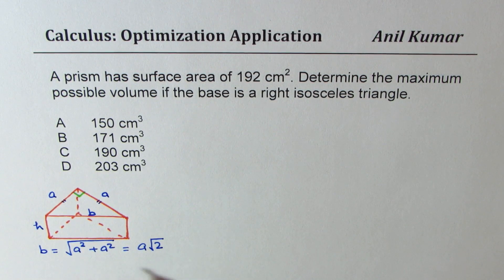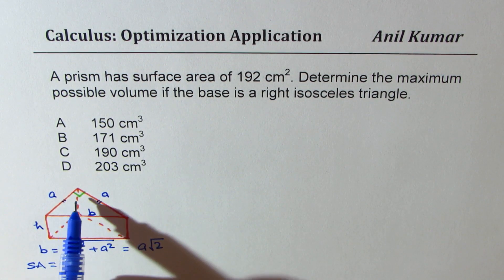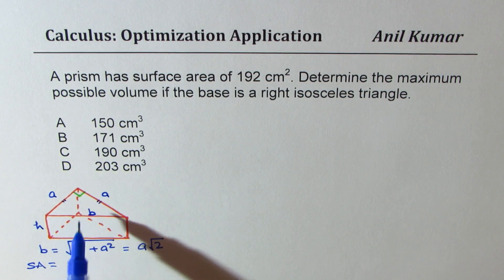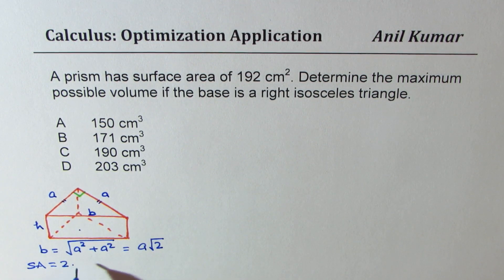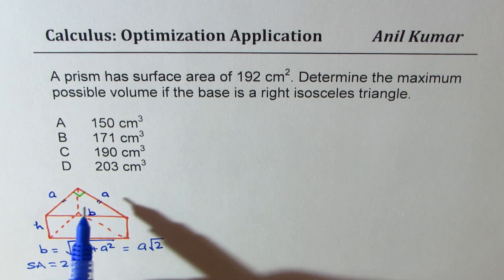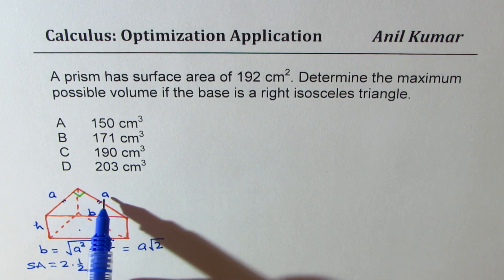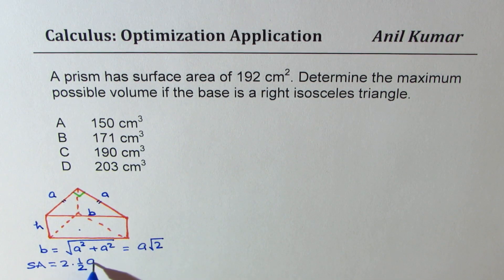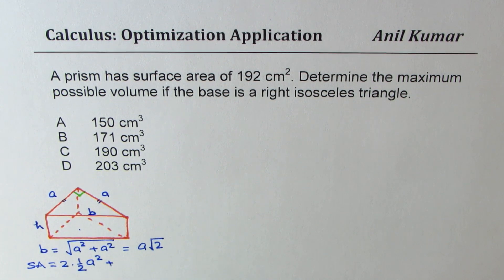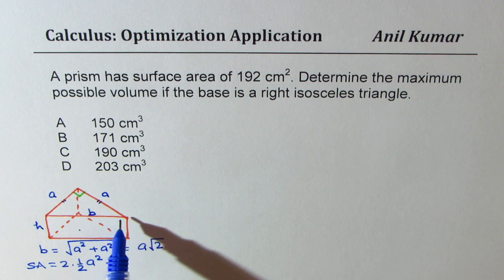Now surface area could be written as two times the area of these two triangles since we have two triangles here. So two times half of base and height could be considered as a and a. So we get a square plus we have three rectangles.